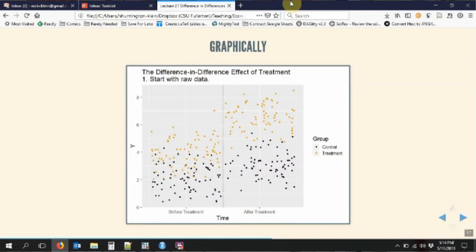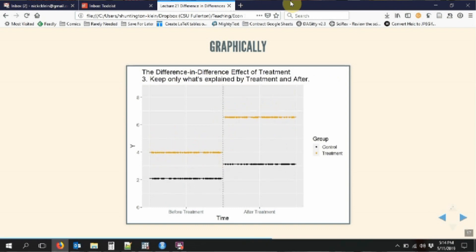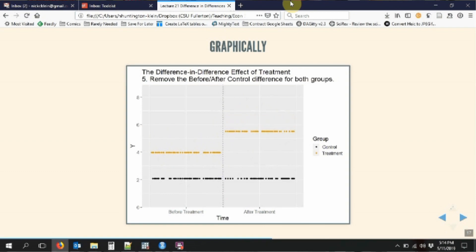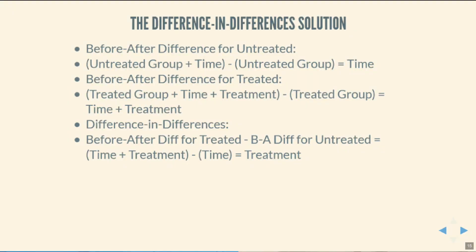That's the basic idea of difference in differences, and we can see it in action in an animation. We start with data for the control and treatment group, before and after treatment. We see the average outcome before and after in each group, take out the difference we see in the control group, and whatever's left of the difference in the treatment group is our difference-in-differences estimate of the treatment effect — controlling for changes over time and differences between the groups.